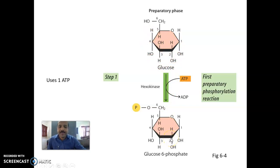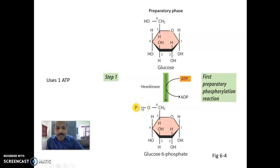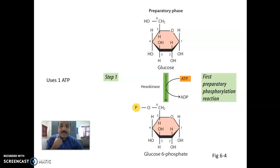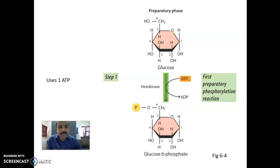Glucose-6-phosphate — this is the 6-carbon compound where you can see the phosphate group. This conversion is influenced by the involvement of ATP in the first preparatory phosphorylation reaction. So this is the first ATP investment reaction; one ATP is invested. As a result of this particular reaction, glucose-6-phosphate is formed. The most important enzyme involved here is called hexokinase.